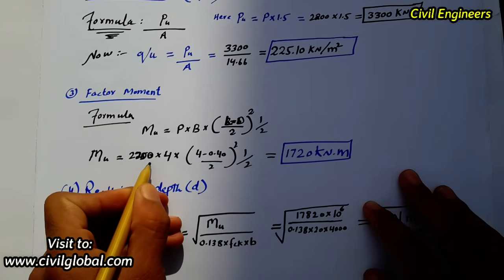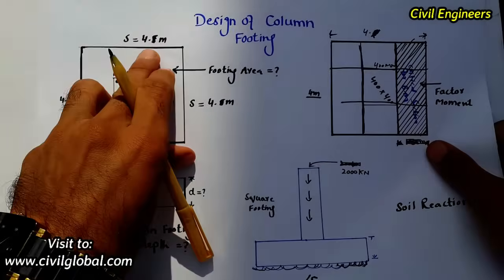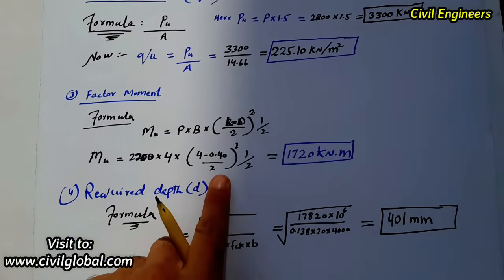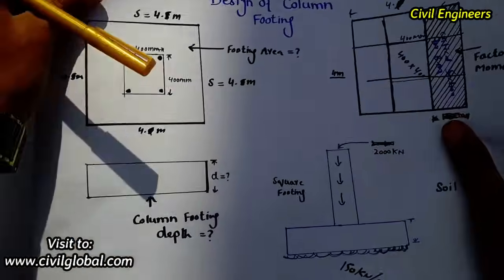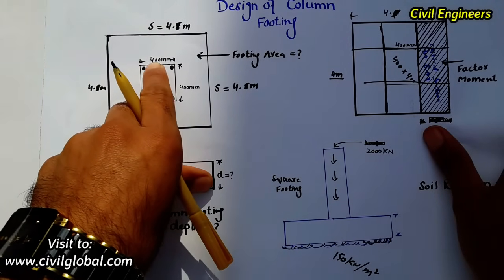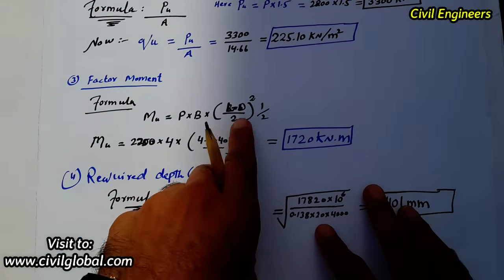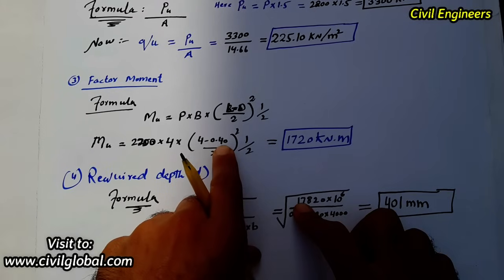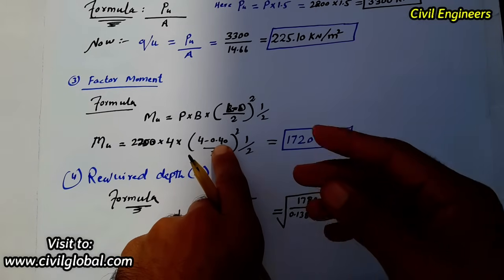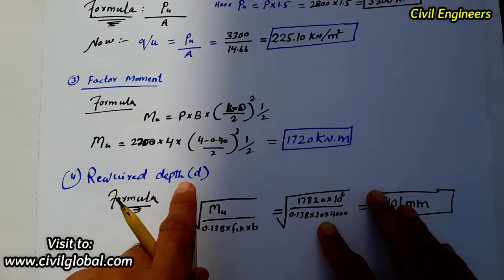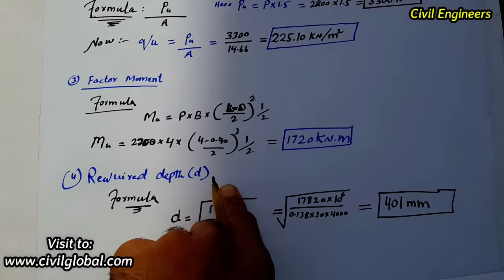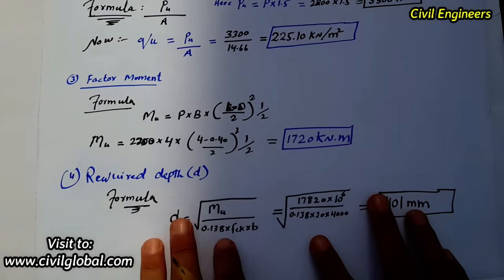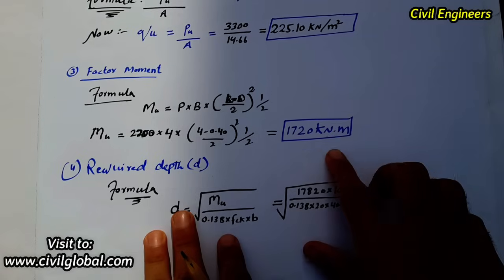Substituting values: Mu = 2,200 × 4 × (4 − 0.40) / 2, where 400 mm is converted to 0.40 m. After squaring and dividing by 2, the factored moment Mu = 1,720 kN·m.